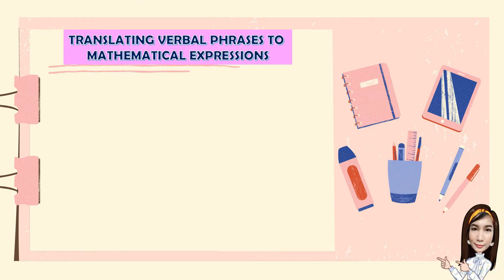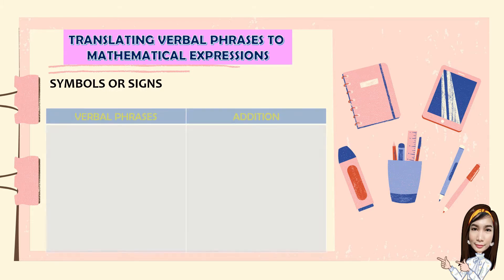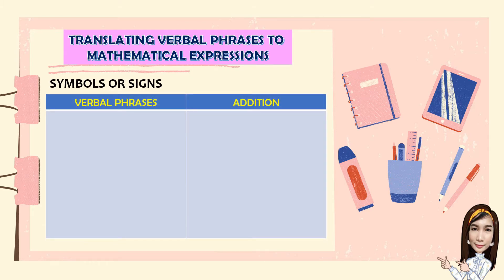In translating verbal phrases to mathematical expressions, you need to know the symbols or signs. Now, for addition, we have the following verbal phrases. The sum of B and 3, that is written as B plus 3. 8 plus C, 9 added to Y.